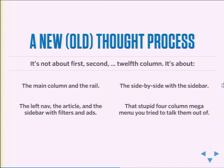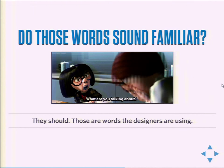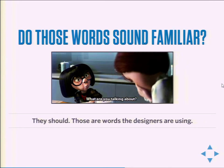It's a new thought process, but it goes back to my background as a graphic designer. It's not about the first, second, or twelfth column. It's about the main column and the rail, a side-by-side product comparison with a sidebar, the nav and the filters and the ads, or that mega menu you tried to talk them out of. These are the words coming from your design department. It lets you speak the language they're speaking about the content, instead of sandwiching content into whatever grid system you happened to pick.